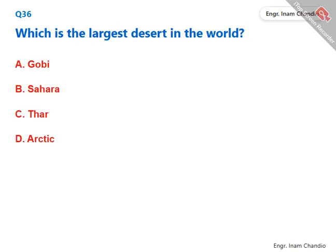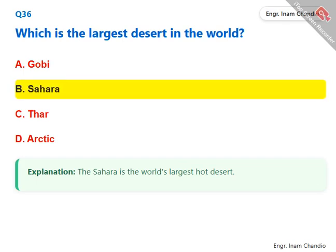Which is the largest desert in the world? The Sahara is the world's largest hot desert. The correct answer is B. Sahara.